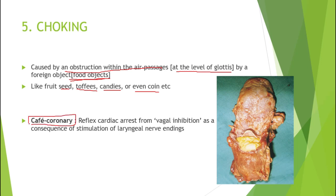Cafe coronary is a term used to describe complete airway obstruction by a bolus of food. If food enters the larynx during swallowing, it usually causes gross choking symptoms — coughing, distress, and cyanosis — which can be fatal unless cleared. However, if the piece of food is large enough to completely occlude the larynx, it will prevent not only breathing but also speech and coughing. The individual will die silently, and the cause of death will not be easily established without a detailed autopsy. This is called cafe coronary.